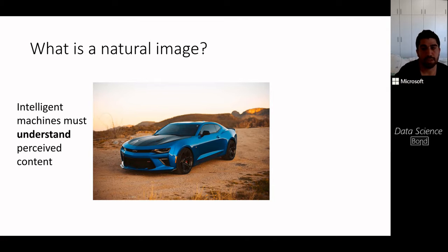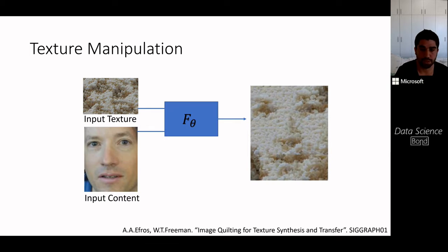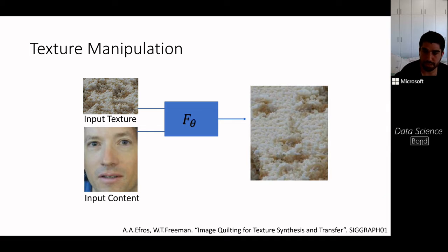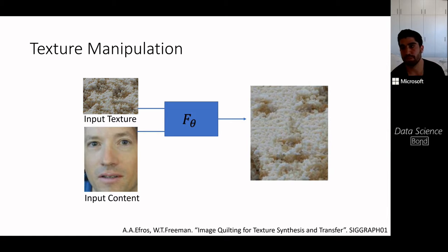People began looking at ways of manipulating these different properties. In the context of texture transfer, some very early works from the 2000s emerged — for example, Efros et al.'s method called image quilting, where small patches of an existing image are stitched together, enabling us to transfer the texture of an image to some content image.